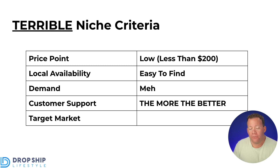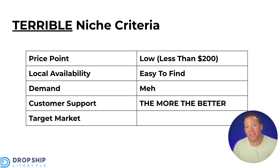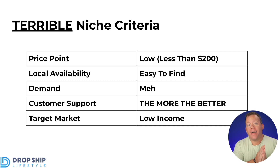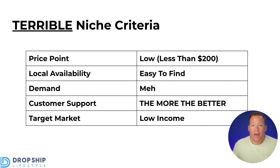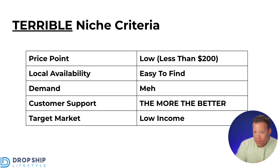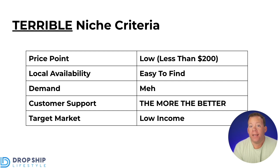The final criteria is target market — who is going to be your ideal buyer. If you want to lose money, you want to sell products that appeal to lower-income households — people that don't really even have the money to spend, spending their hard-earned money at your store. That way the purchase matters that much more to them, and if there's any little issue they will be following up, you will be hearing from them, and you will be refunding them.